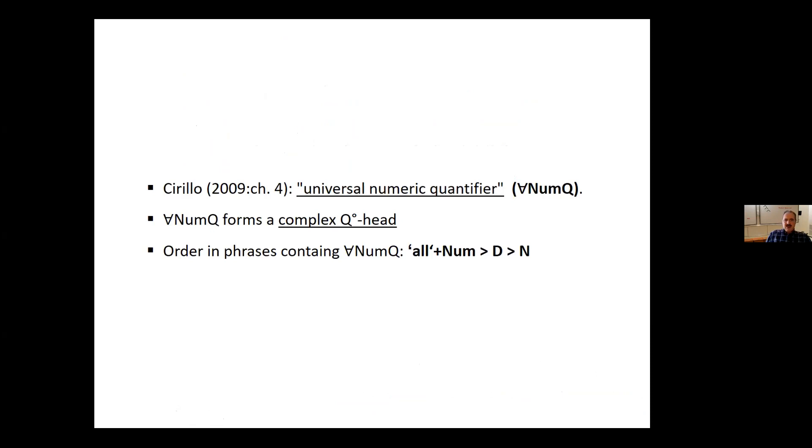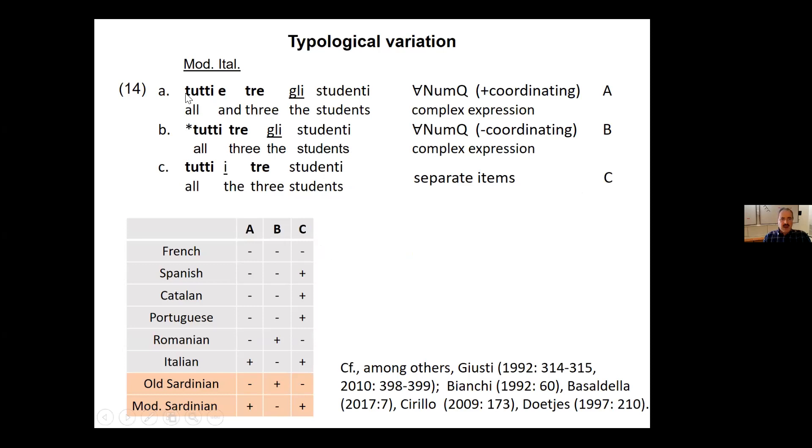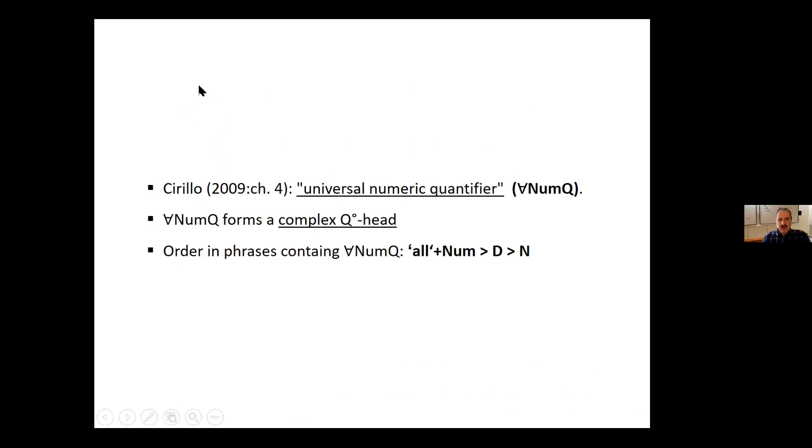Now, as I said, Cirillo calls this a universal numeric quantifier. And what is important here is that he considers not only Cirillo, but most studies at which I've looked, considers this, that we have one complex thing. For Cirillo, a complex Q head. And typically, in this universal numeric quantifier, this complex Q head, according to Cirillo, this is the order. So we have all plus numeral, and then the determiner, and then the noun, exactly the order that we find in Old Sardinian.